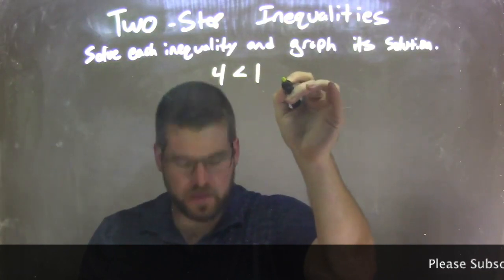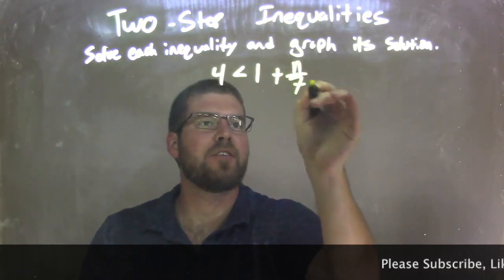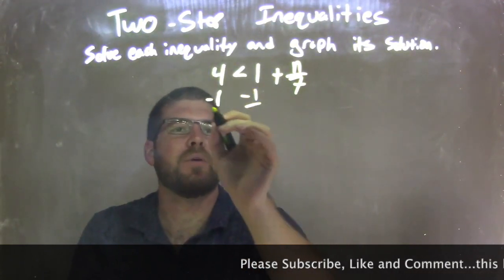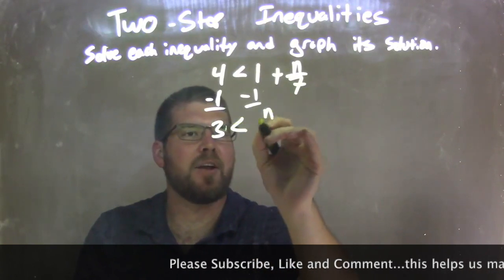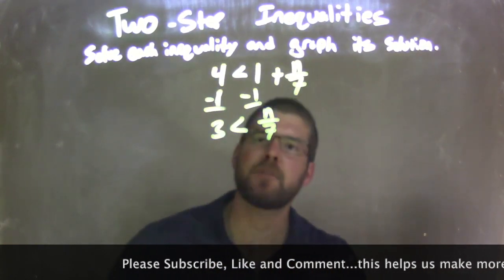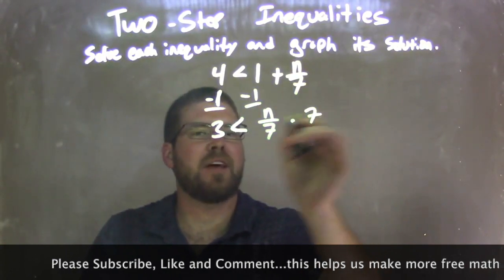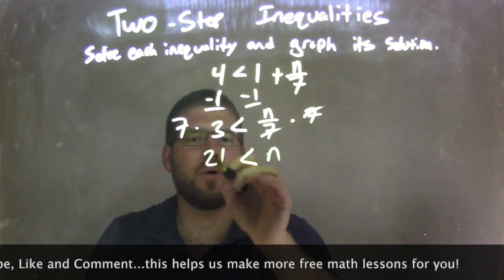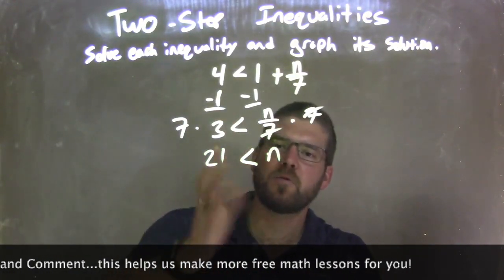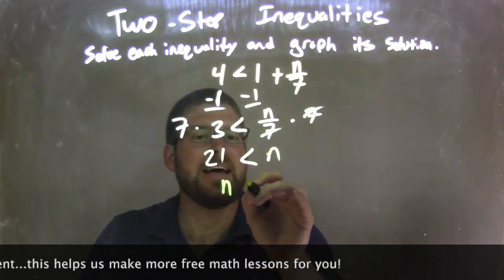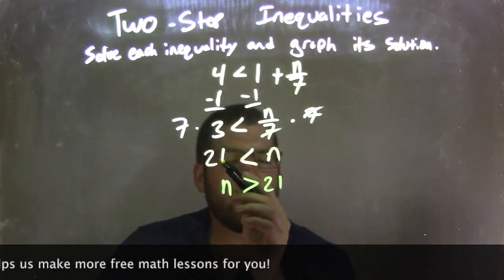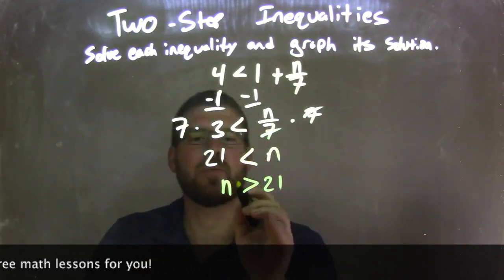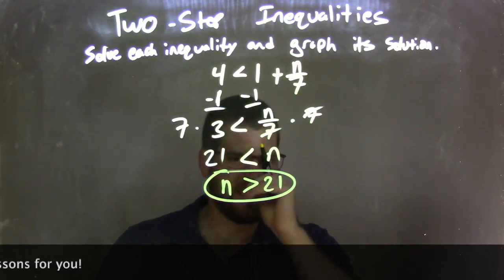4 is less than 1 plus n over 7. My first step: subtract 1 from both sides, leaving me with 3 on the left is less than n over 7. Now I multiply both sides by 7 — that eliminates the 7s, giving me n by itself on the right, and 7 times 3 is 21 on the left. Rewriting with n first: n is greater than 21. Before I had 21 is less than n — same statement, same set of numbers. n is isolated.